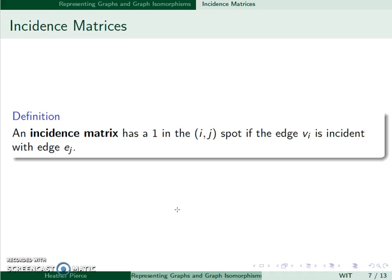An incidence matrix has one in the i, j spot when the edge Vi is incident with edge Ej. Here, every row will represent a vertex, and every column will represent an edge.